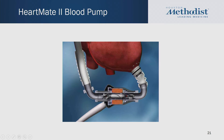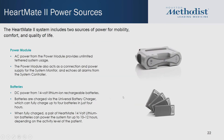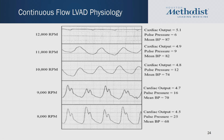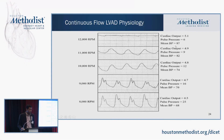The HeartMate II is an axial flow device with a rotor, inflow cannula, and outflow cannula. The driveline exits to the pocket controller, connected to batteries and a power module. As you increase the RPM, there is loss of pulsatility but an increase in mean blood pressure and decrease in pulse pressure — suggesting that you lose a pulse. This is the common physiologic principle with all continuous flow LVADs.